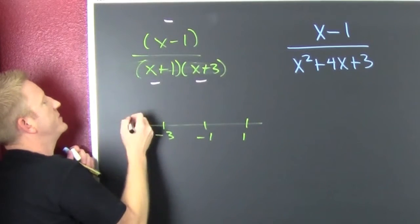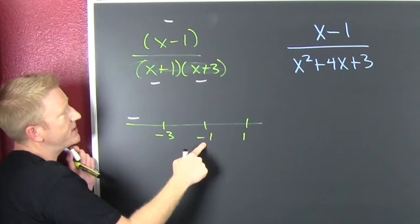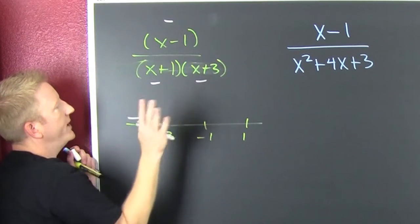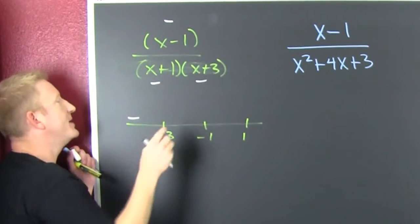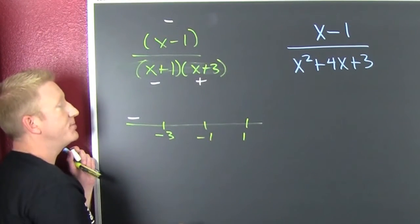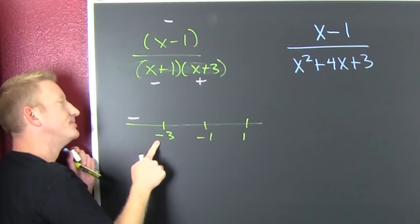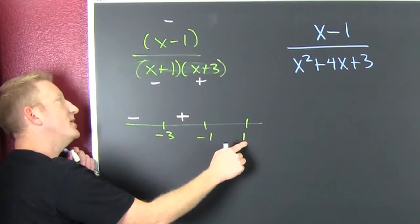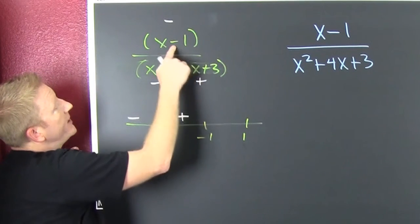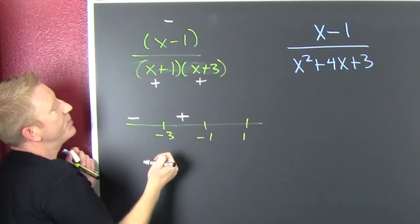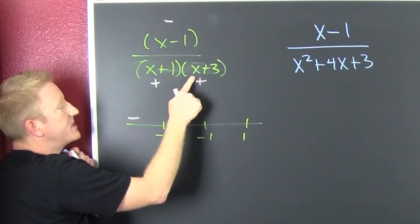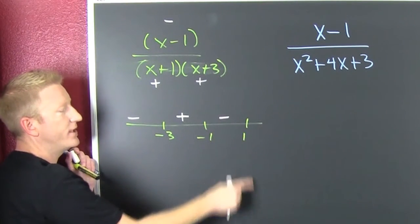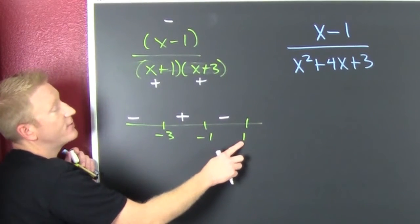With -4 I get three negatives, which gives a minus overall. Then I pick -2 between -3 and -1: that gives minus 3 in the numerator, and minus 1 times plus 1 in the denominator — so that's positive. Between -1 and 1, I pick 0: I get one negative sign, so the function is negative, meaning below the x-axis in that interval.